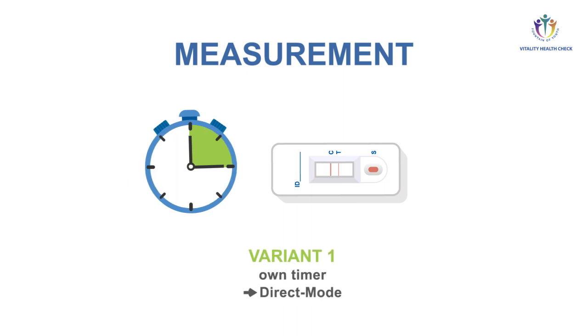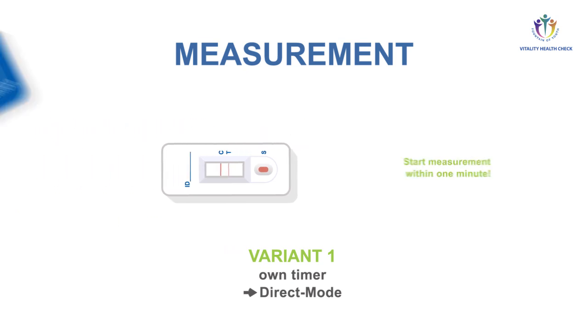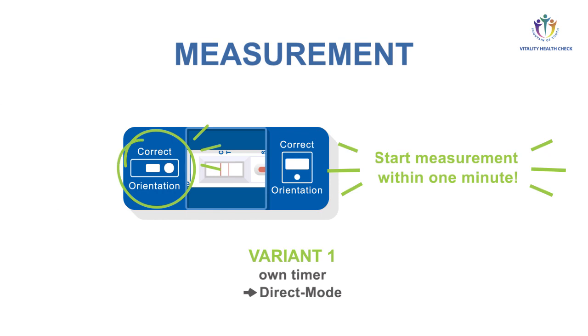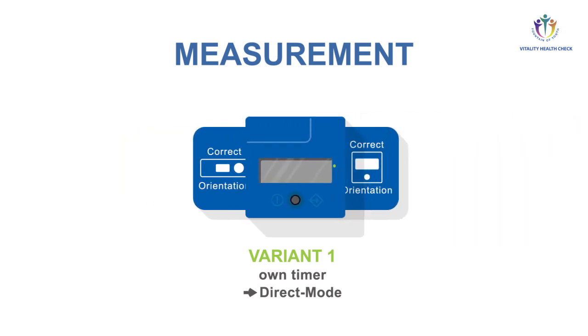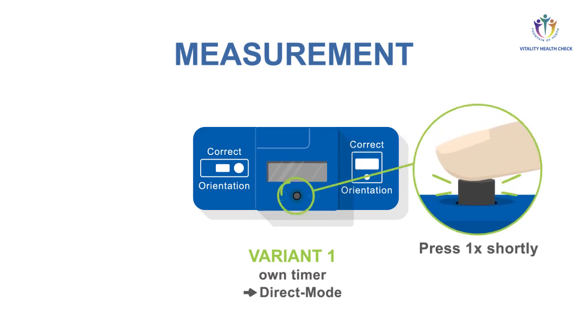In variant one, measurement with your own timer and VHC reader in direct mode, perform these steps exactly after 15 minutes. Place adapter on the test cassette. Place VHC reader on top of the adapter. Check for correct orientation. Turn on the VHC reader by briefly pressing the button.